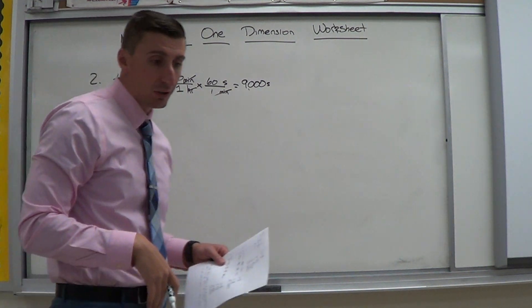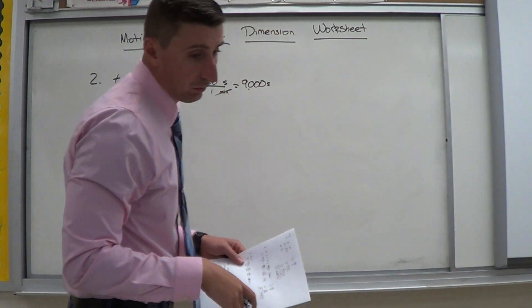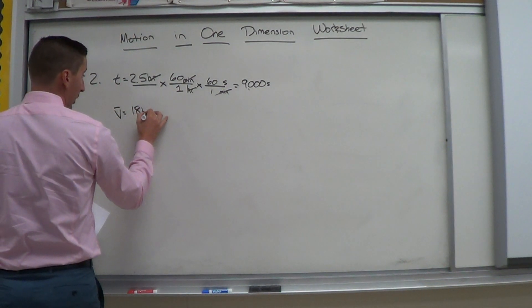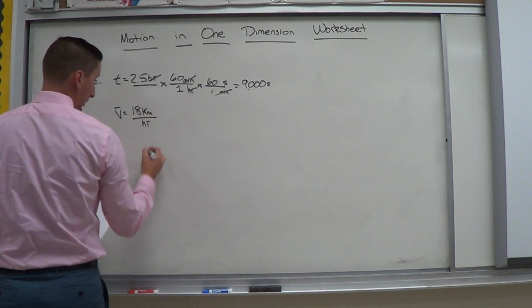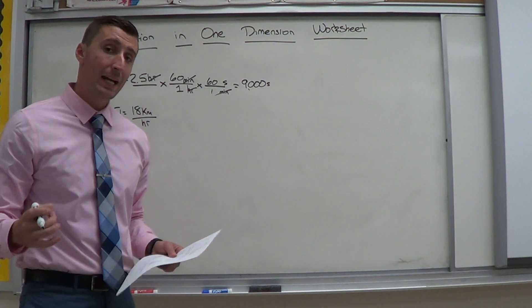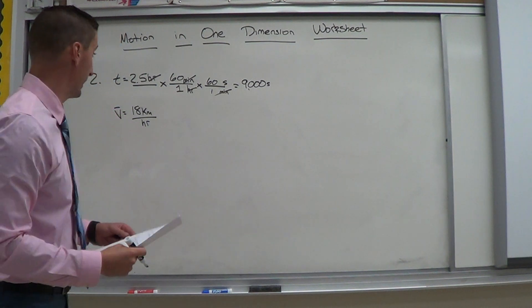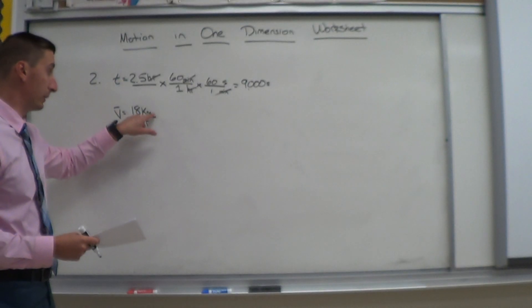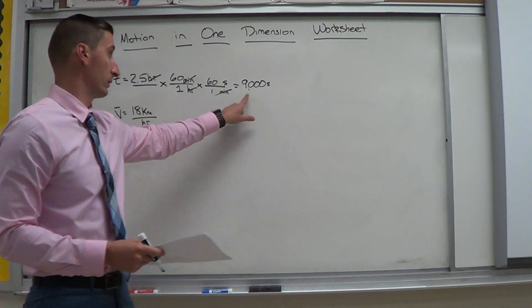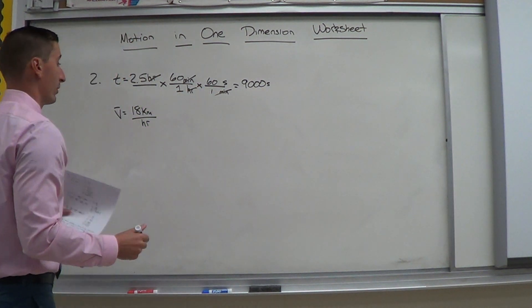Then it gives me average velocity, saying that her velocity is 18 kilometers per hour. So average velocity is 18 kilometers per hour. Well, if you notice there, both length and time are not in base units. Right? Our base units for length is meters. And our base units for time, like above, is seconds. Alright. So let's go ahead and convert that. Let's change the distance first, the length.